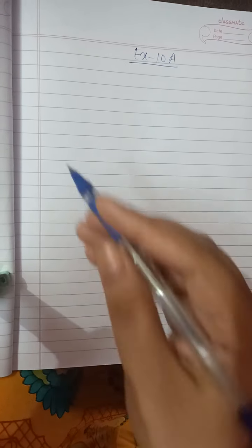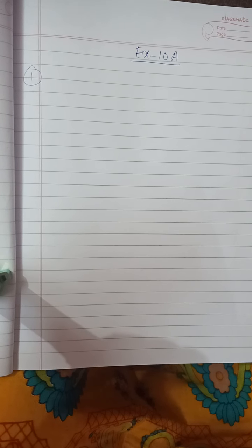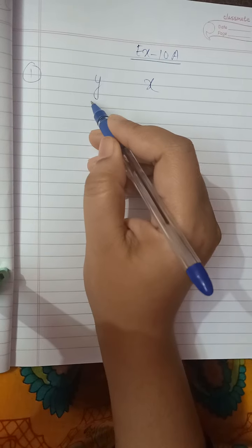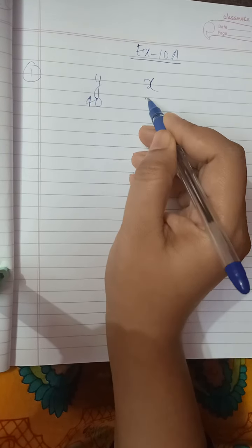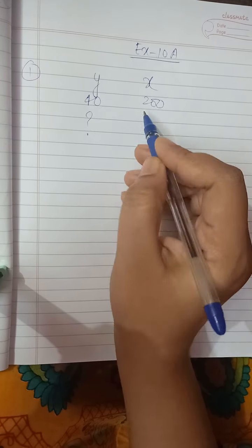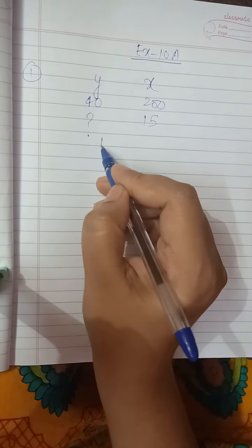For example, in the first question, given that y is directly proportional to x, it means it is in direct variation. y equals 40, x equals 200. We have y and x. y equals 40 and x equals 200. Find y when x equals 50. It is in direct proportion, so write it as is.